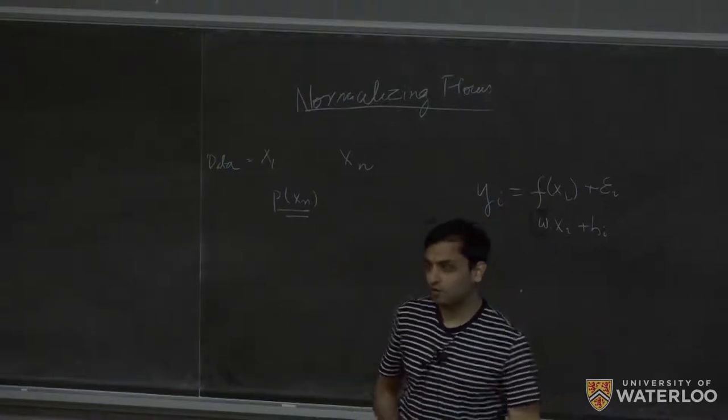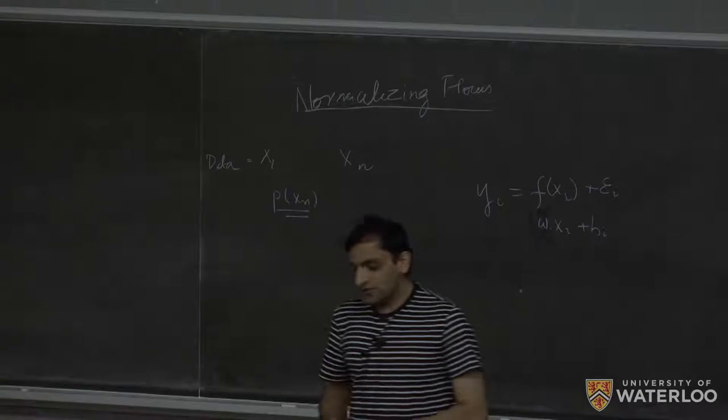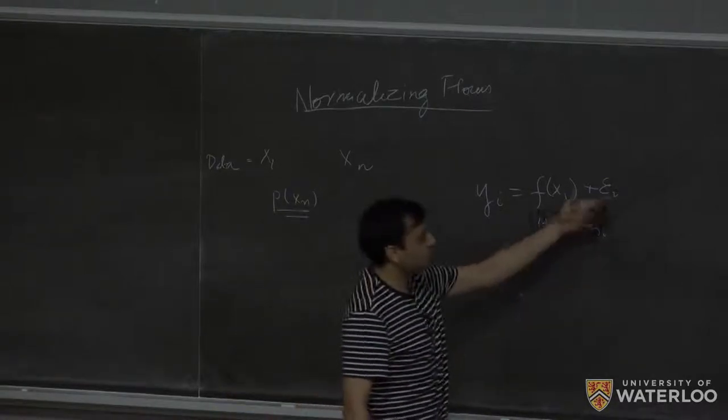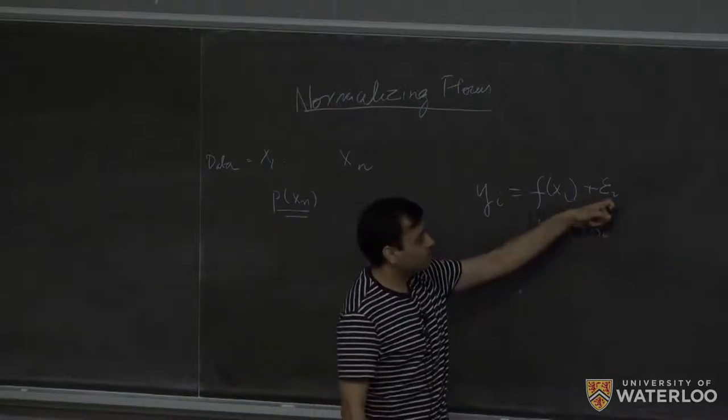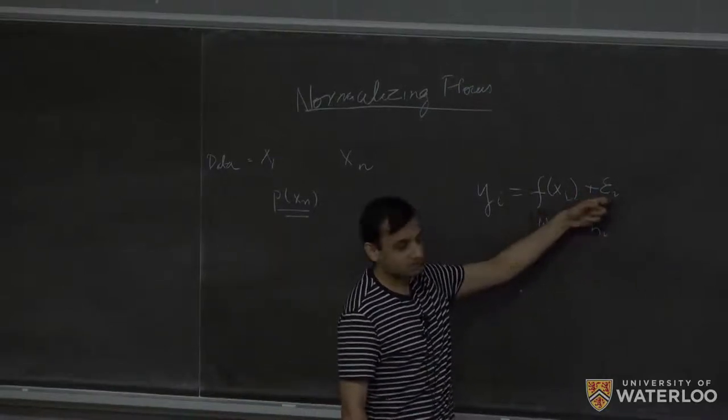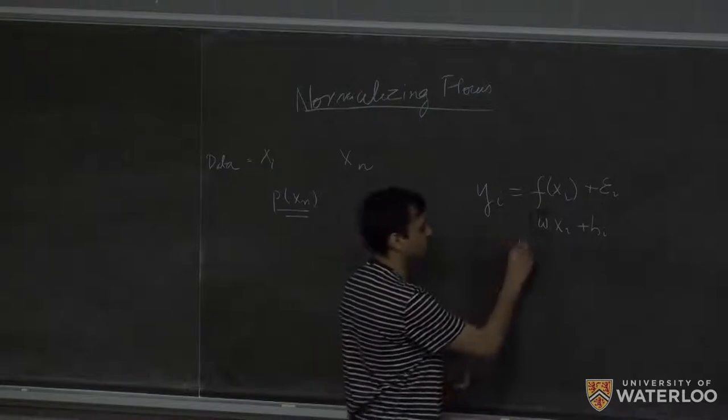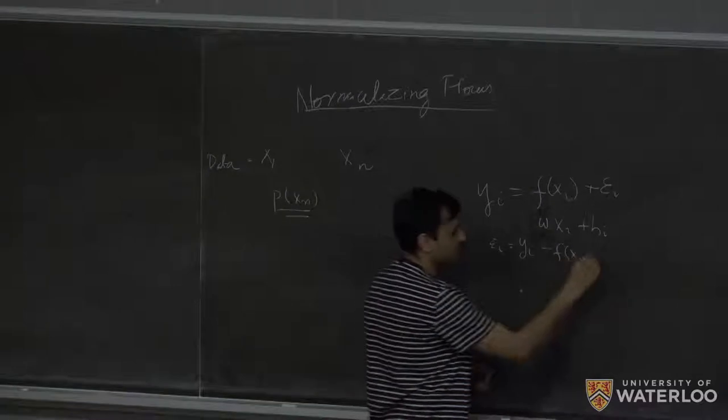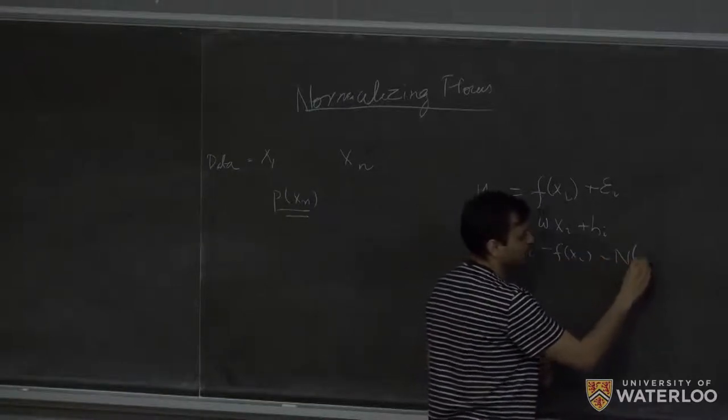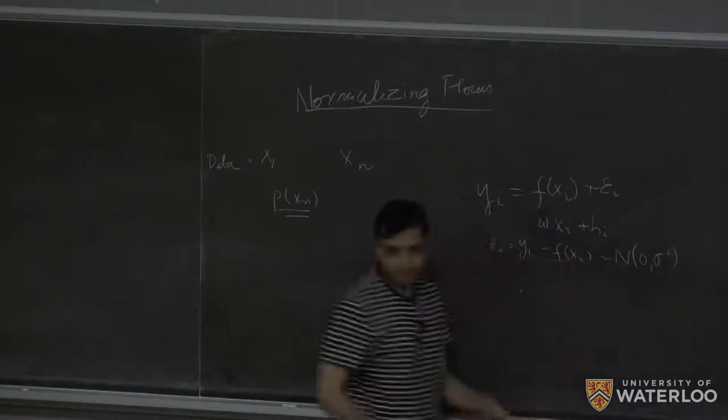All right, so almost everybody knows that. So basically when this was Gaussian distributed, what you did was you tried to fit a Gaussian distribution over this epsilon i. So basically what you did was yi minus f of xi, which is epsilon i, and you said that this was distributed as normal zero sigma square.